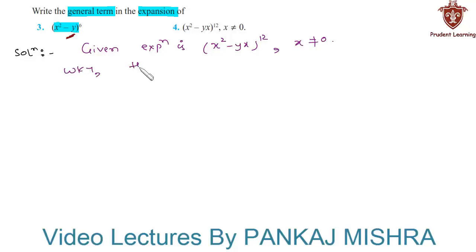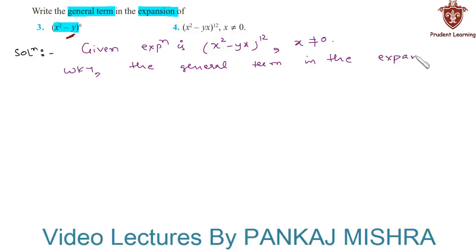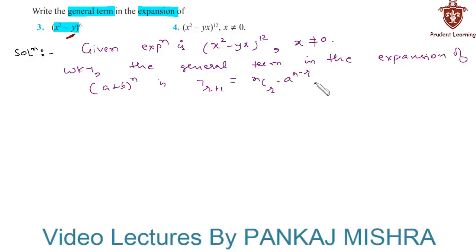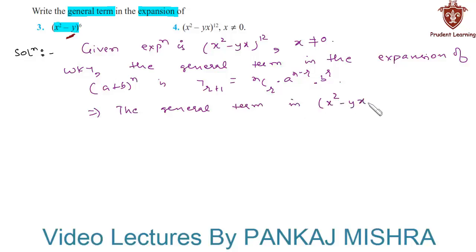We know that the general term, or the (r+1)th term, in the expansion of (a + b)ⁿ is T(r+1) = nCr × a^(n-r) × b^r. This implies the general term in (x² - y/x)¹², where x ≠ 0, is: